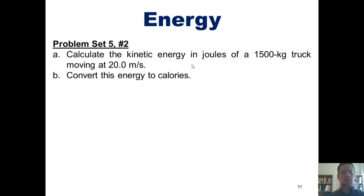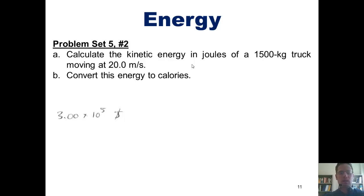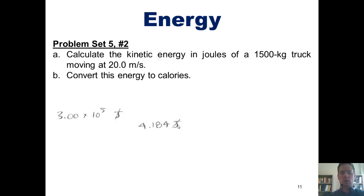In Part B, we're asked to convert this answer into calories with a lowercase c. We begin with the value we just determined: 3 × 10⁵ joules. We use dimensional analysis to convert to the units we want. Since joules are the units we currently have, joules go in the denominator. We want to get to calories, and there is a way to directly relate joules to calories. In the numerator, we write that one calorie equals 4.84 joules.